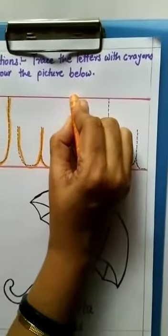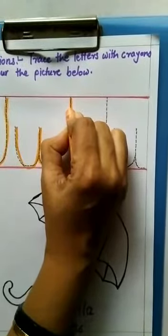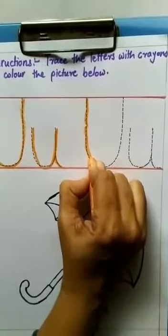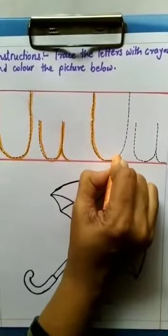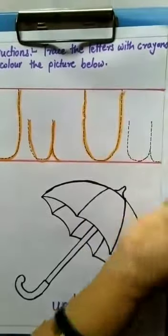Again, we will trace capital U. I will start tracing from here. And I will come down. I will take a small curve shape. Then, I will go up. Capital U.